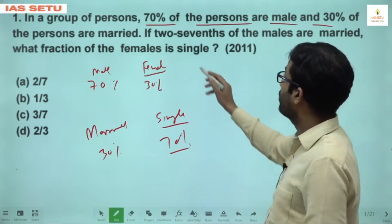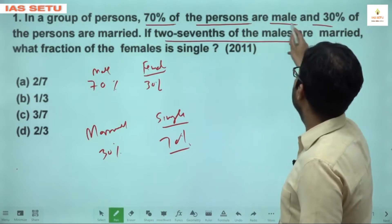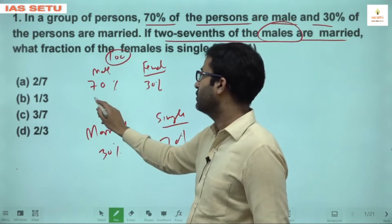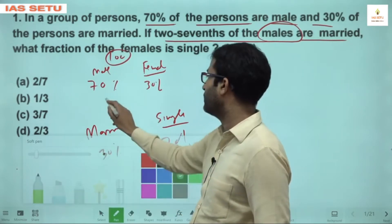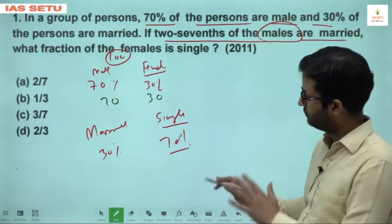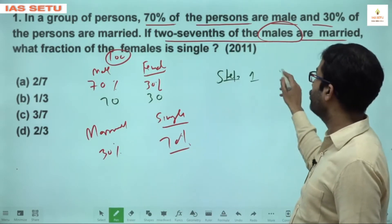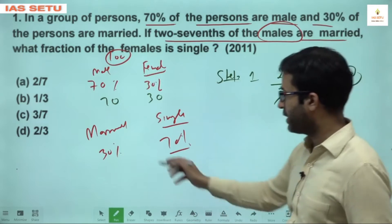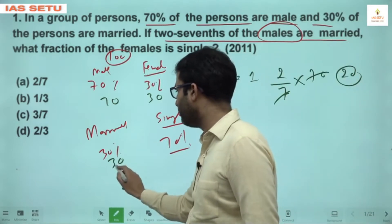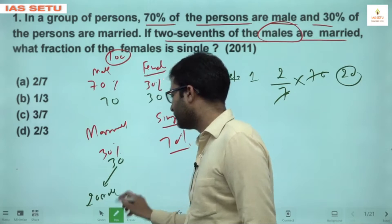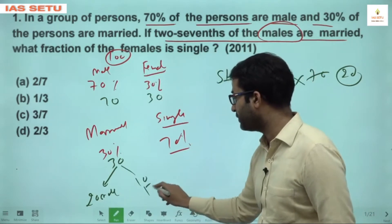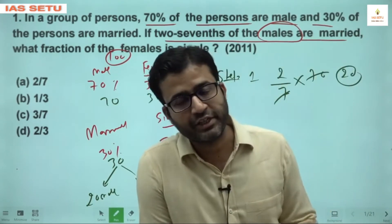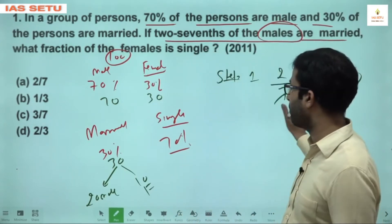Now, 2/7 of the males are married. I assume total persons = 100, so there are 70 males and 30 females. Step 1: 2/7 of 70 = 20. So 20 males are married. Out of the 30 total married persons, 20 are male, meaning the remaining 10 are married females.